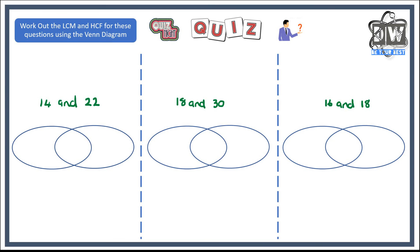Now this is quite a long quiz question — a lot of work to do. Use those prime factor trees and Venn diagrams to work out the lowest common multiple and the highest common factor of all the given information. It's going to take a while, so give it a real good go, come back and check your answers. If you're struggling, go back and watch the video again before you do the quiz. Good luck everyone!